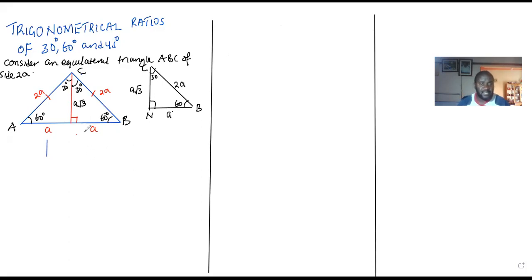It means that if I bisect vertex C with a perpendicular bisector to a point N down here, then this side will be halved at vertex C by angle 30, even this one by angle 30. Then if I extract out this triangle, which is right angled, which is CNB, I get this triangle.